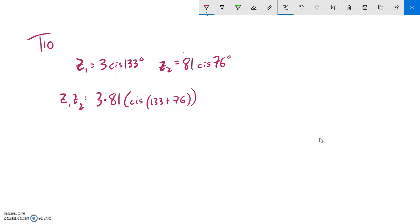So 3 times 81, I'm just grabbing my calculator here, is 243. And then 133 plus 76 is 209. So multiplying in cis form is really easy. You multiply those magnitudes and add those angles.